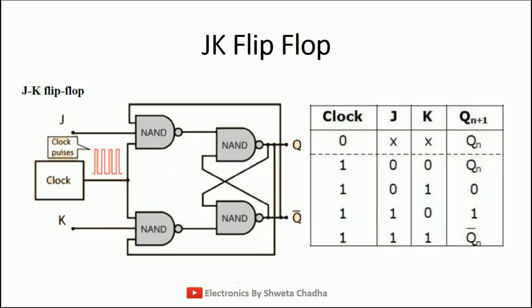First of all, the logic circuit diagram of JK flip-flop. We have 4 NAND gates: gate number 1, 2, 3 and 4. The first two NAND gates, that means gate number 1 and gate number 2, are having 3 inputs, whereas gate number 3 and gate number 4 are having 2 inputs as per their given connections. The inputs are J, K and the clock signal, where the feedback has also been connected as Q and Q-bar with our input gates.